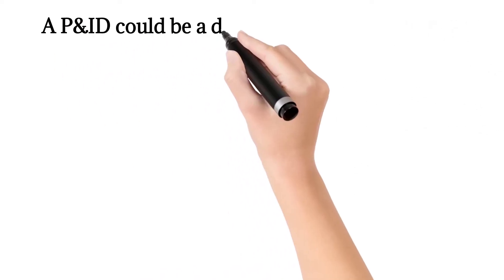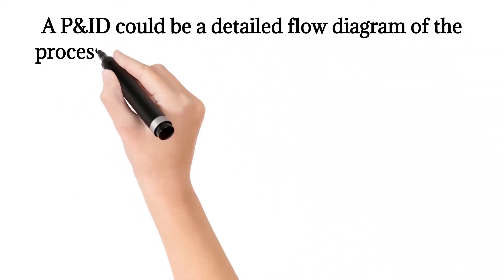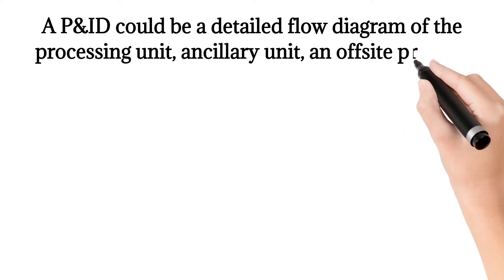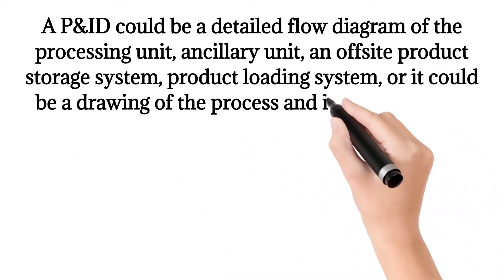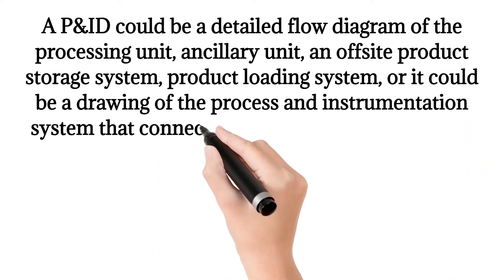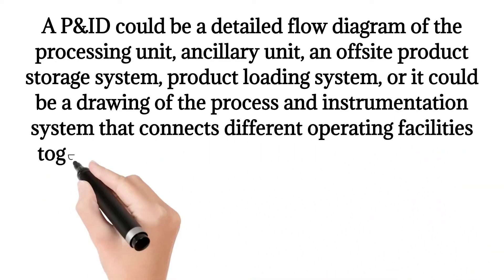A P&ID could be a detailed flow diagram of the processing unit, ancillary unit, an offsite product storage system, product loading system, or it could be a drawing of the process and instrumentation system that connects different operating facilities together.